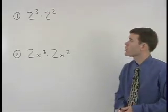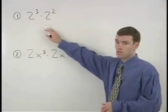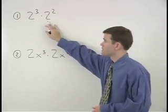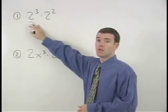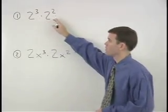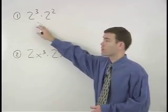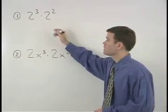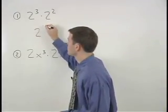For the first problem on the board, since our two powers have like bases of 2, we can multiply them together by simply adding their exponents. So 2 to the third times 2 squared is just 2 to the fifth.